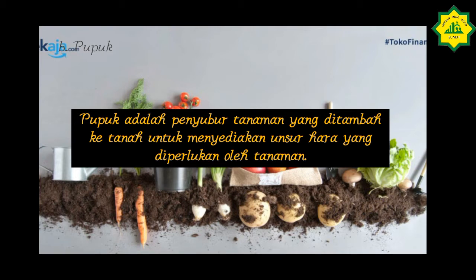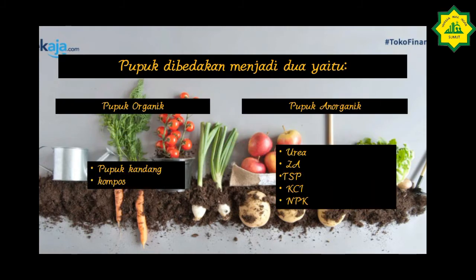Pupuk adalah penyubur tanaman yang ditambah ke tanah untuk menyediakan unsur hara yang diperlukan oleh tanaman. Pupuk dibedakan menjadi dua, yaitu pupuk organik — contohnya adalah pupuk kandang dan pupuk kompos — dan pupuk anorganik — contohnya urea, ZA, TSP, KCI, dan NPK.